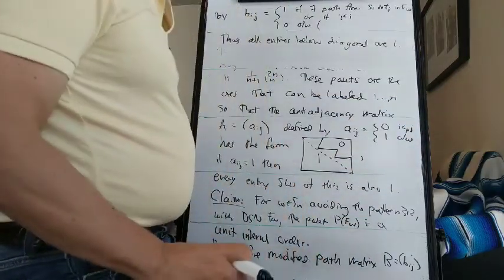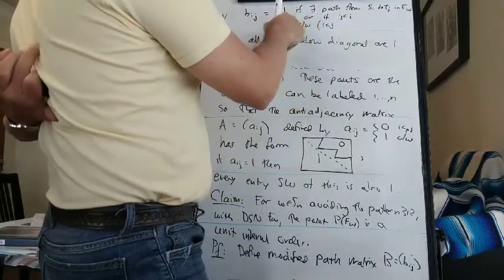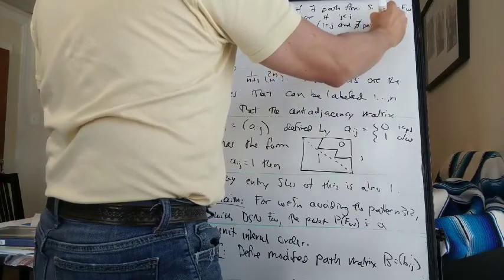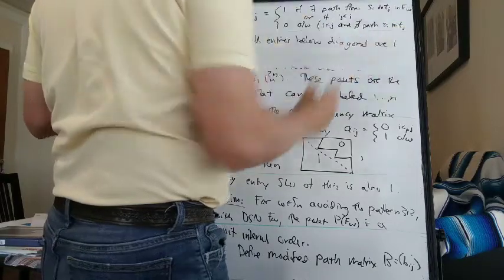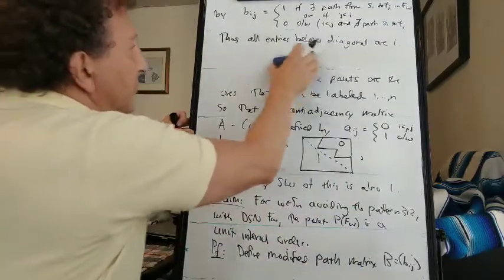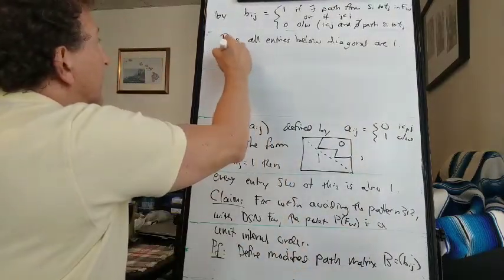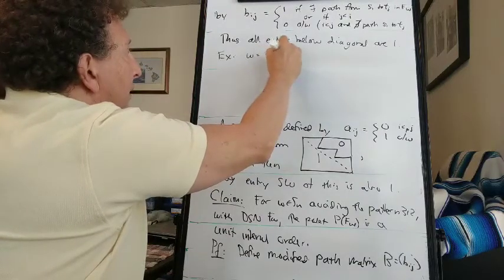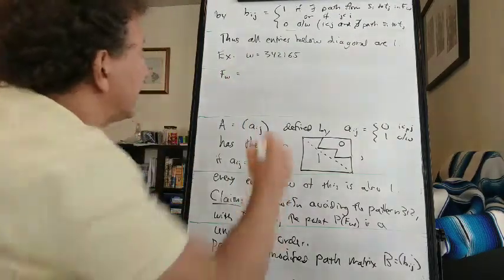So let me do an example just so you can picture what I'm doing here. Let W be the permutation 3, 4, 2, 1, 6, 5. The descending star network has this form. We've got a star up here, and then two, three stars that shared two paths between them.